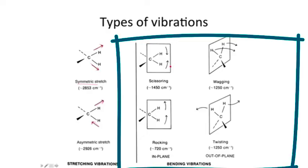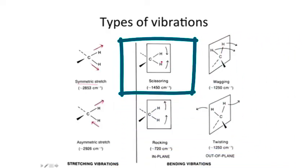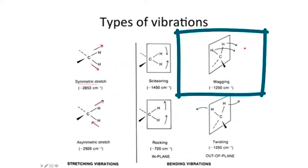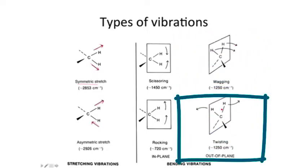Other types of vibrations are called bending vibrations. Here, two protons bending close together and farther away, closer, farther, closer, farther. Rocking a bit, like a rocking chair, or wagging, like a dog wagging its tail back and forth, and twisting. These protons would be twisting away from each other.